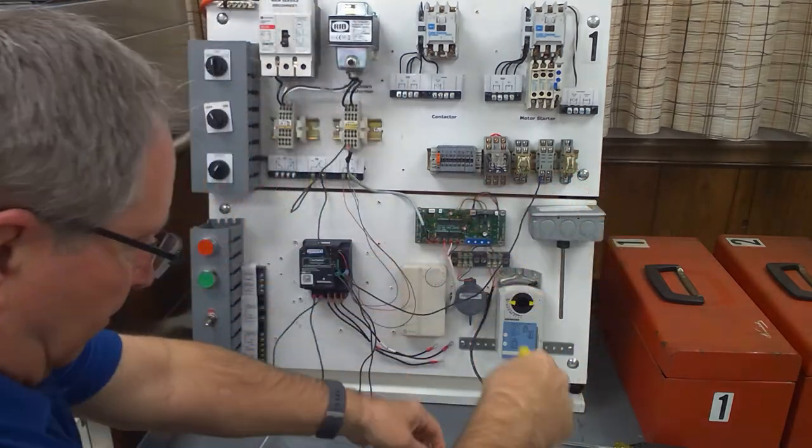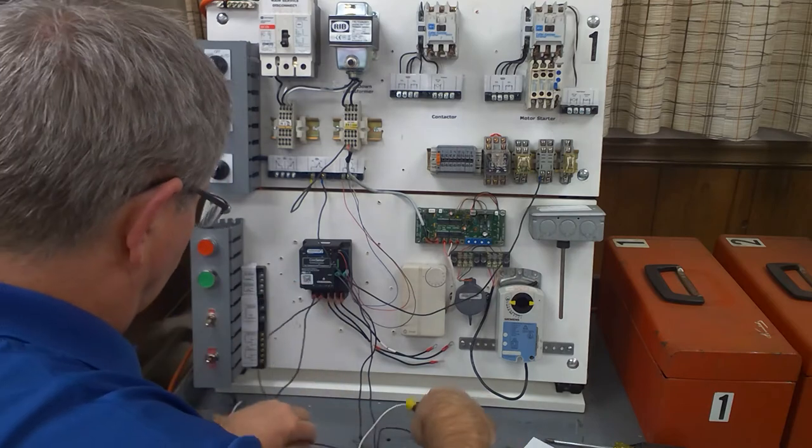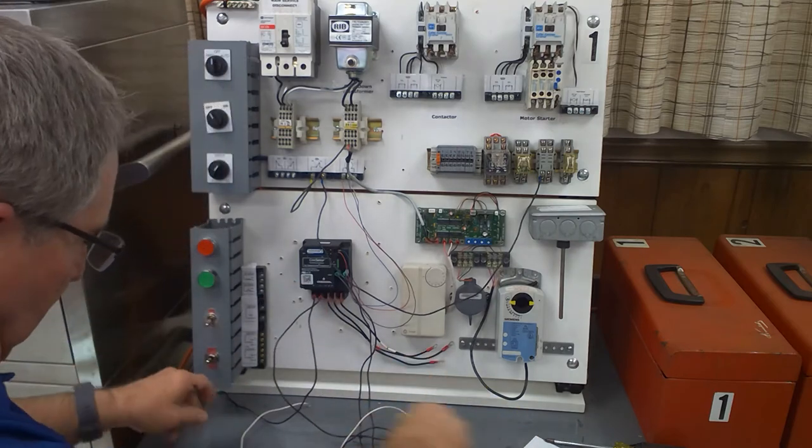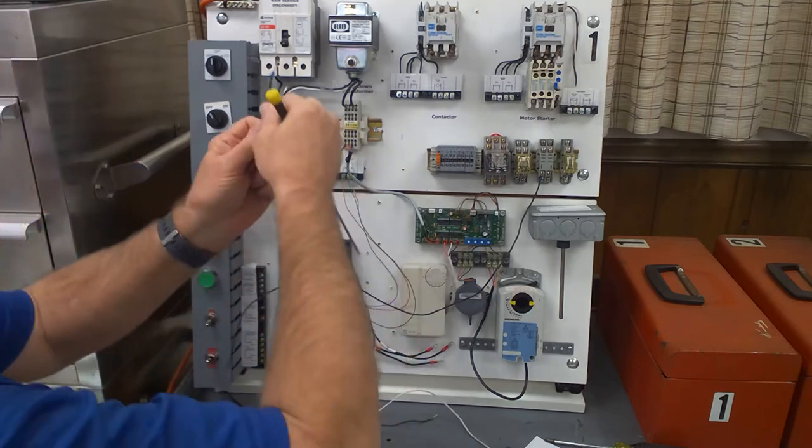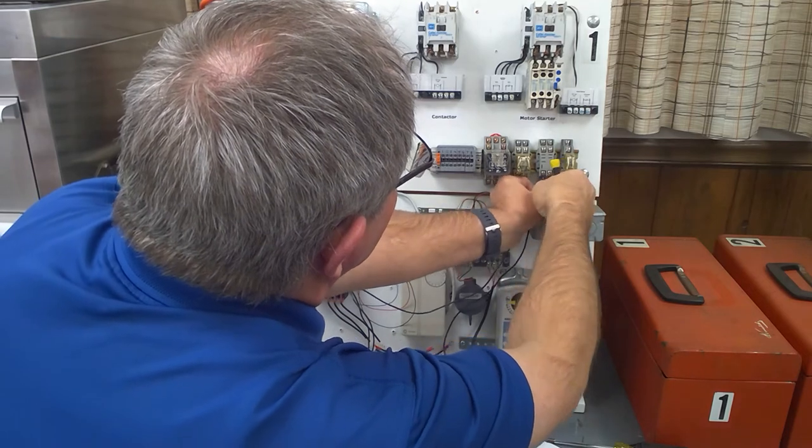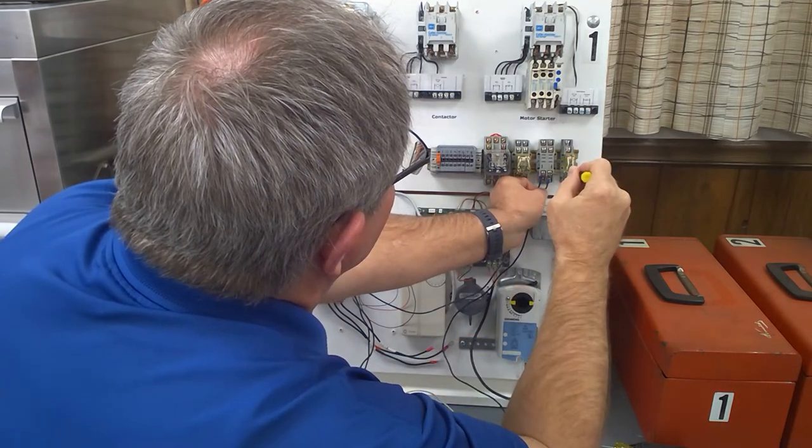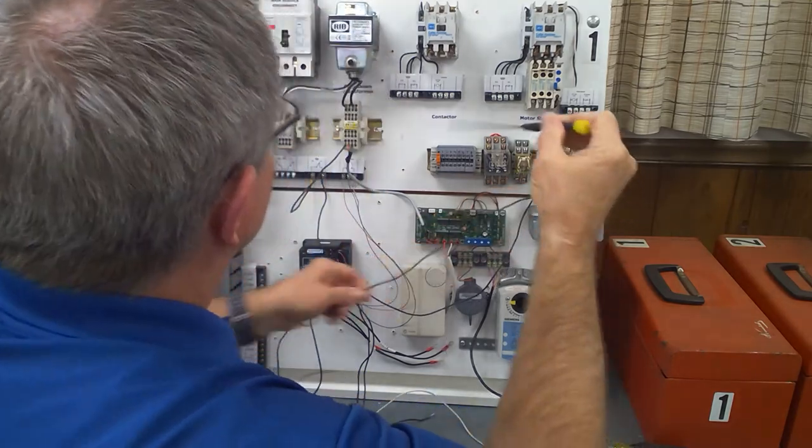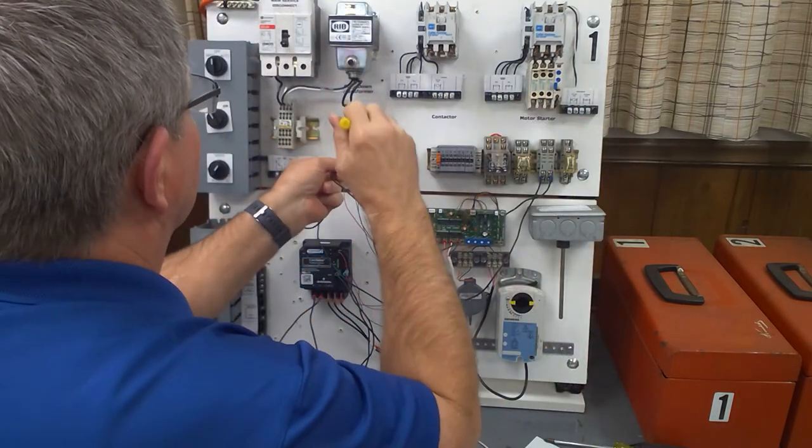So I'm going to go ahead and wire from the switch to the coil there, and then I'm going to take another wire and I'm going to go from the coil on the other side, which you could call the common side, is going to go to 24 volt common right here.